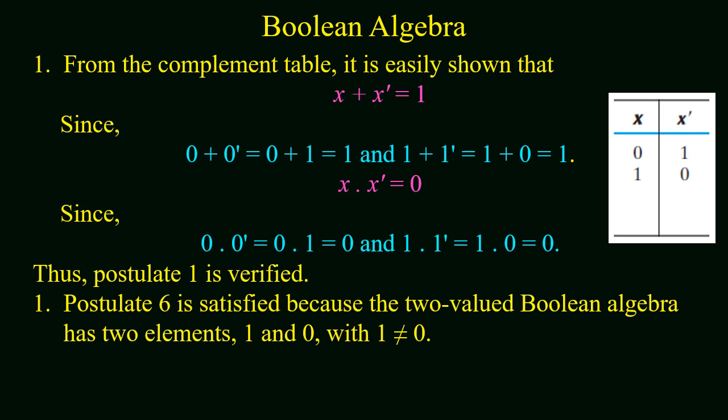Now from the complement table, we can say that x plus x complement is equal to 1. Because if we consider x equal to 0, then x prime will be equal to 1. Or we can say that x plus x prime will be equal to 0 plus 0 prime, or 0 plus 1, which gives a value of 1. Or if we consider x have a value of 1, then its complement will be equal to 0. Then 1 plus 1 prime will be equal to 1 plus 0, or 1. So x plus x prime will always be equal to 1.